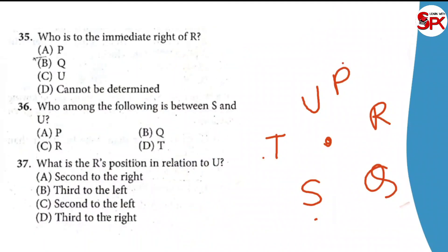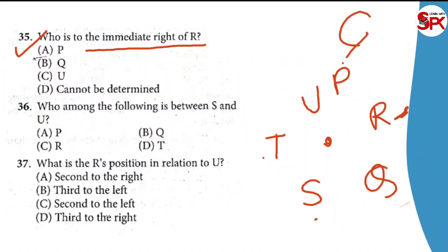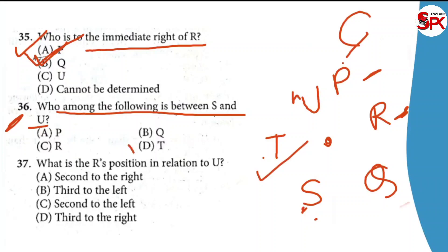How about the next question to discuss? Who is to the immediate right of R? R's immediate right — who is it? So R — to R's immediate right — who is it? P. So A is the answer — your right answer. So the 36th question: who among the following is between S and U? S and U — who is in between? T is there. So T — your right answer is D.